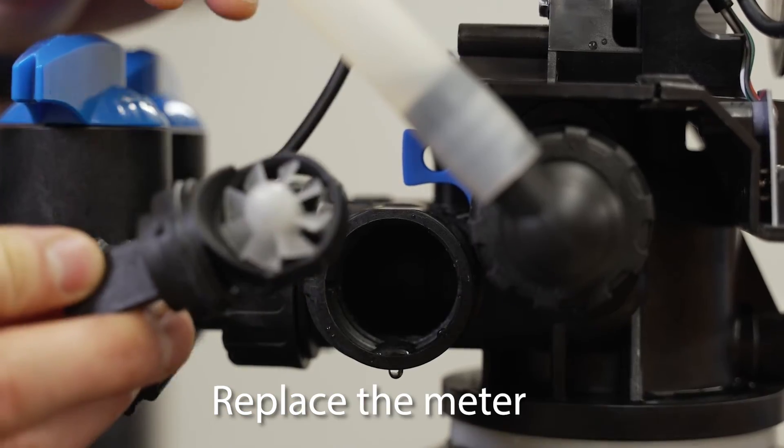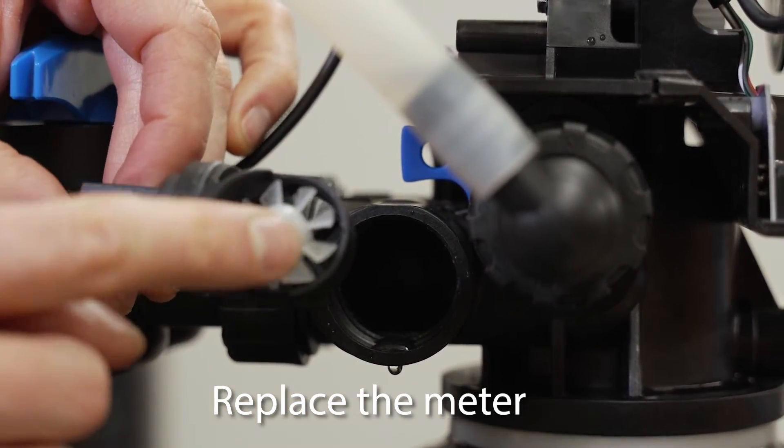Then we can replace the meter. When you put the meter back into the valve body, just make sure that this impeller is facing forward.